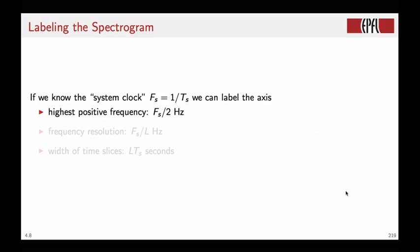If we know the system clock for the signal, or the sampling rate, we can label the axis just in the same way we did for the DFT. So remember, the highest positive frequency is Fs over 2, where Fs is the sampling rate of the signal. The frequency resolution, how fine a frequency we can resolve in the DFT, will be given by Fs over L. And the width of the time slice, so the time resolution, is L times Ts seconds, where Ts is 1 over Fs.